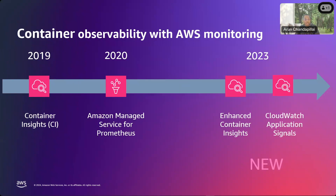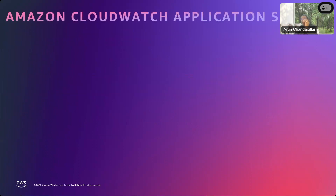Then in 2023, we introduced two brand new features. Enhanced Container Insights provides additional telemetry from Kubernetes control plane components, kube-state metrics, and a lot more real-time troubleshooting capabilities. We also introduced CloudWatch Application Signals — a game changer. In one sentence: CloudWatch Application Signals automatically collects the golden metrics — availability, volume of requests, latency, and faults and errors — all four golden metrics from your applications, enabling you to quickly see operational health without writing any custom code.